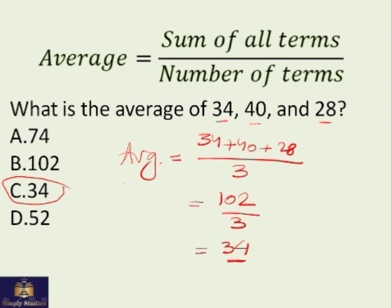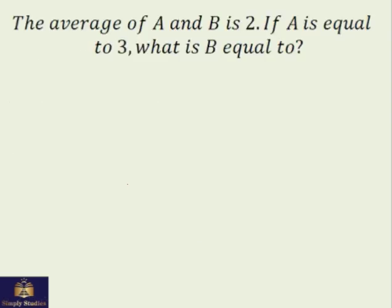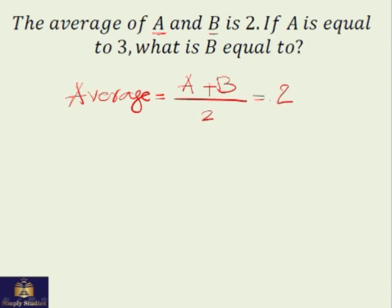Another one: The average of A and B is 2. It means there are two terms, so the average of A and B is 2. Now if A equals 3, what is B equal to? So instead of A we'll substitute 3: 3 plus B over 2 equals 2.